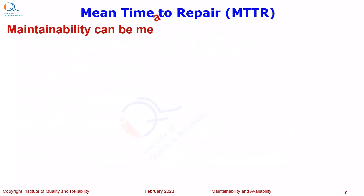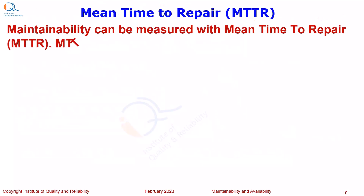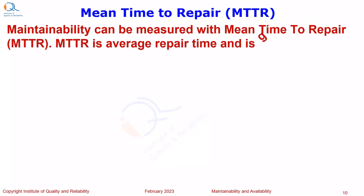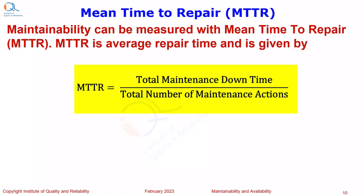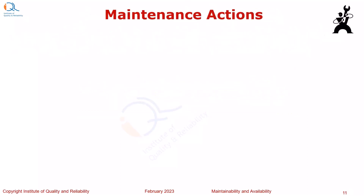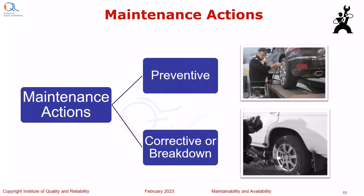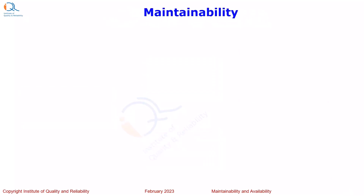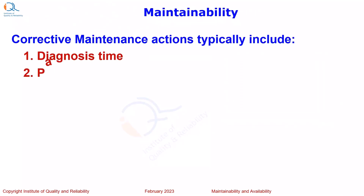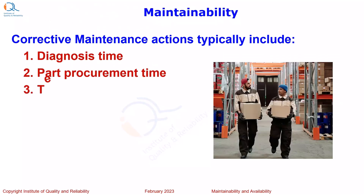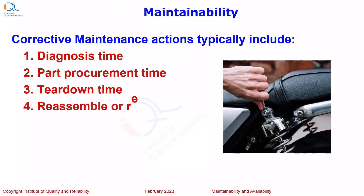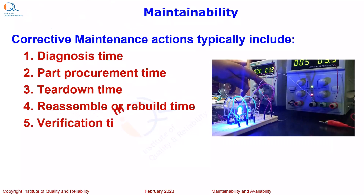Maintainability can be measured with mean time to repair or MTTR. MTTR is the average repair time and is given by total maintenance downtime divided by total number of maintenance actions. In reality, maintenance actions can be preventive or corrective. Corrective maintenance actions can also be referred to as breakdown actions. They typically include diagnostic time, part procurement time, teardown time, reassemble or rebuild time, and verification time.